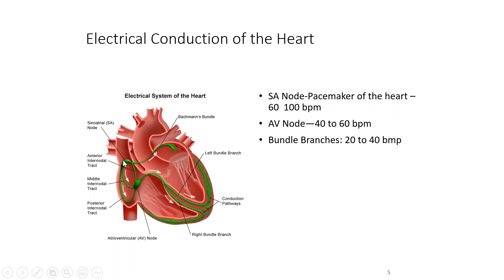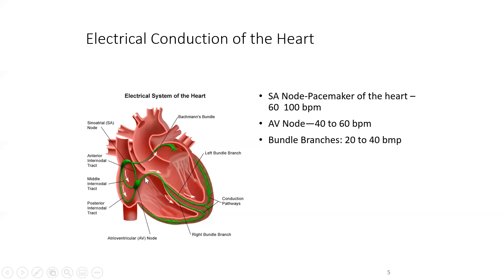After the SA node ignites that electrical impulse, it goes to what we call the AV node — the atrioventricular node. The AV node fires at 40 to 60 beats per minute. If the SA node is not working for whatever reason, then the AV node will pick up the electrical responsibility, but at a lower rate.